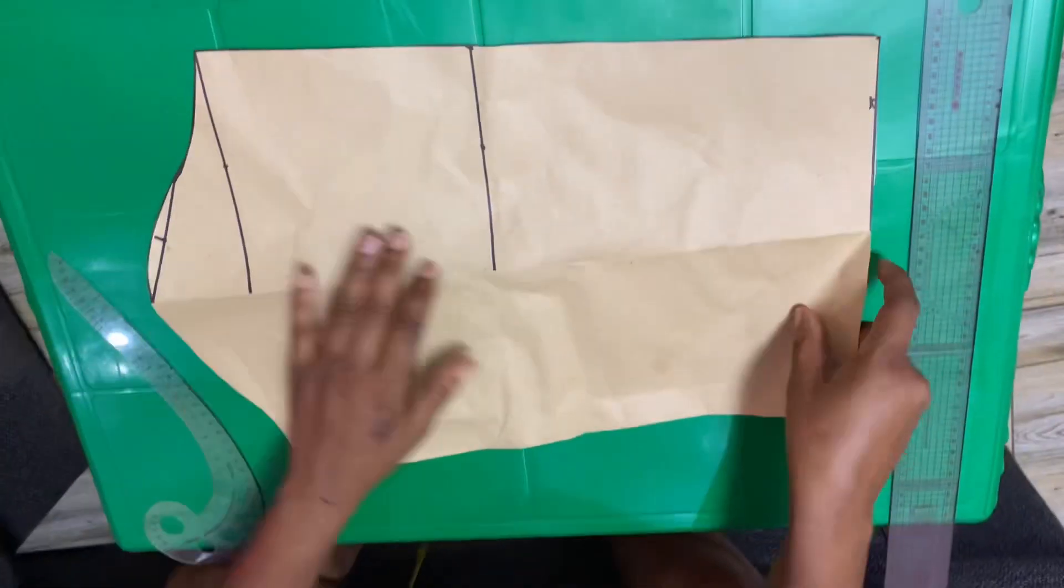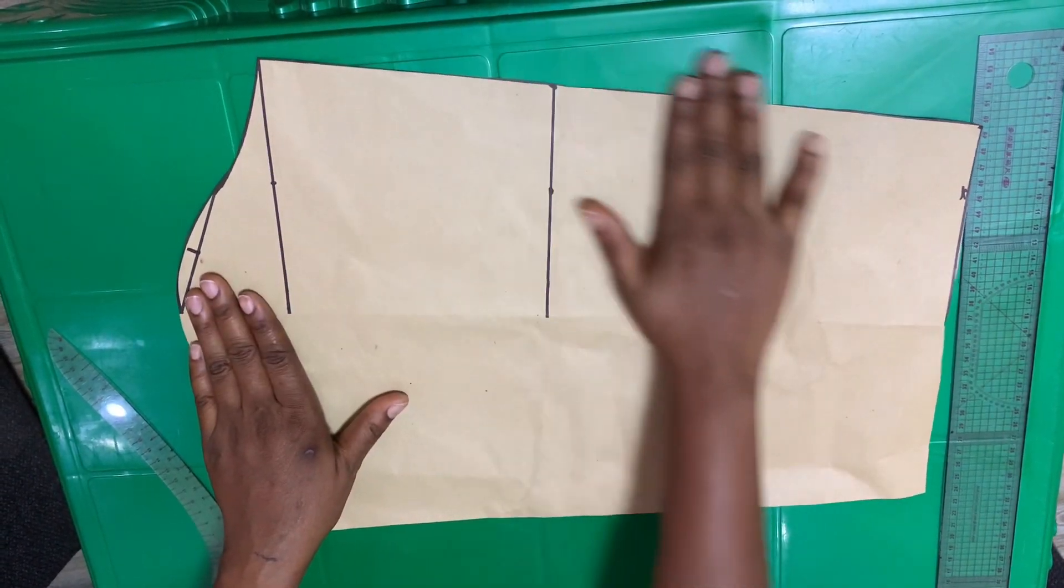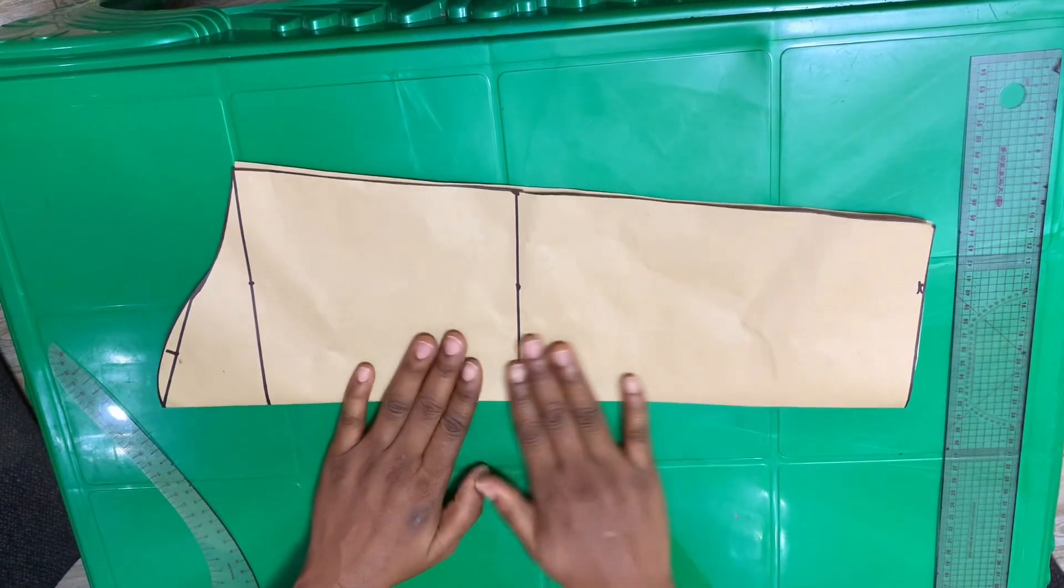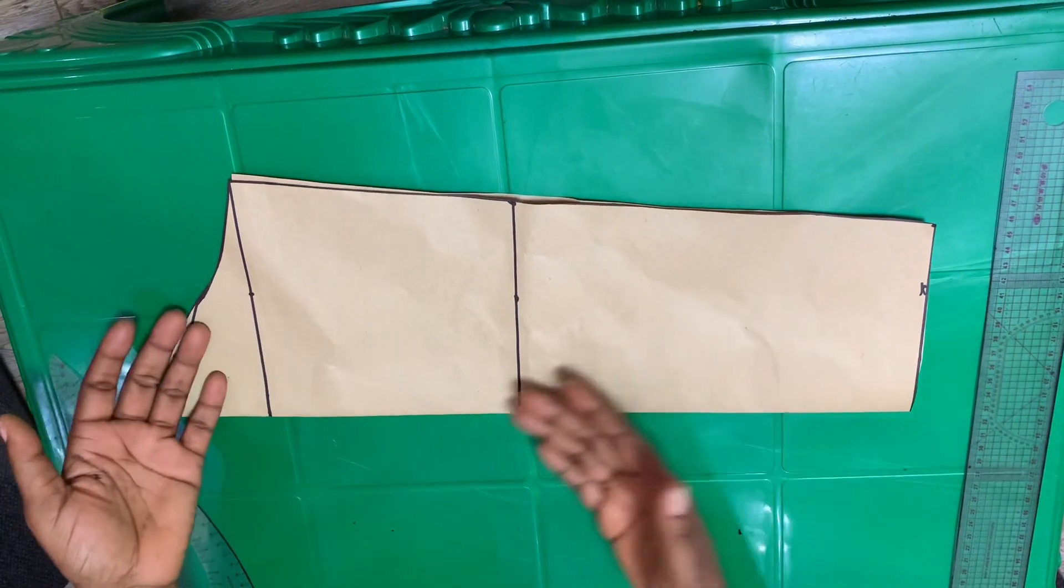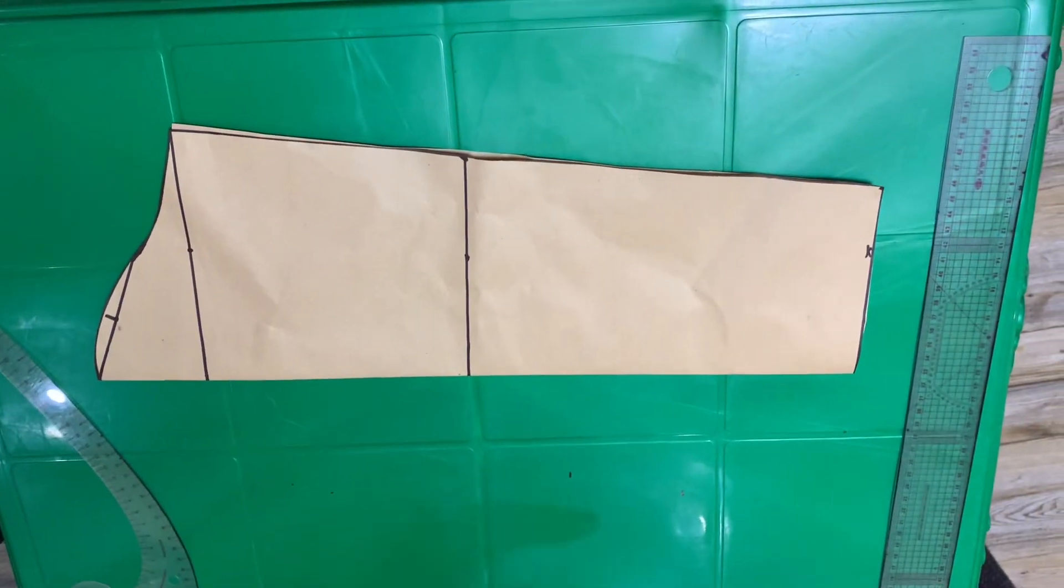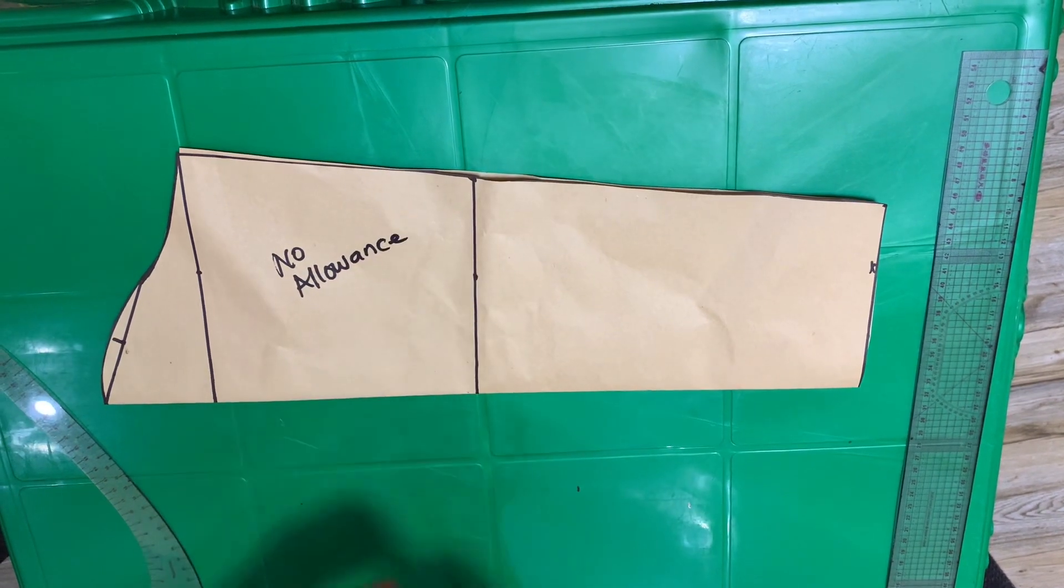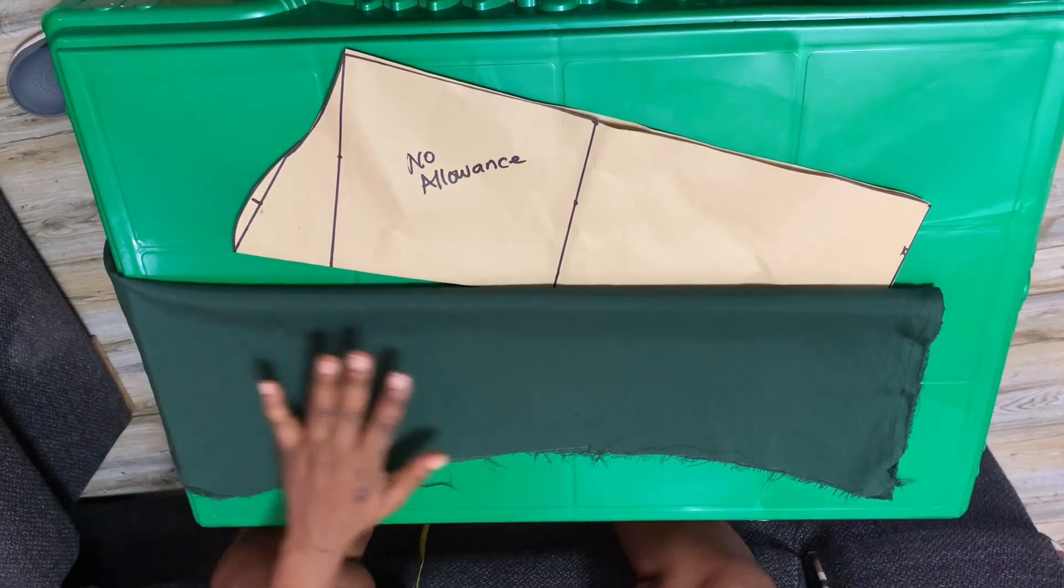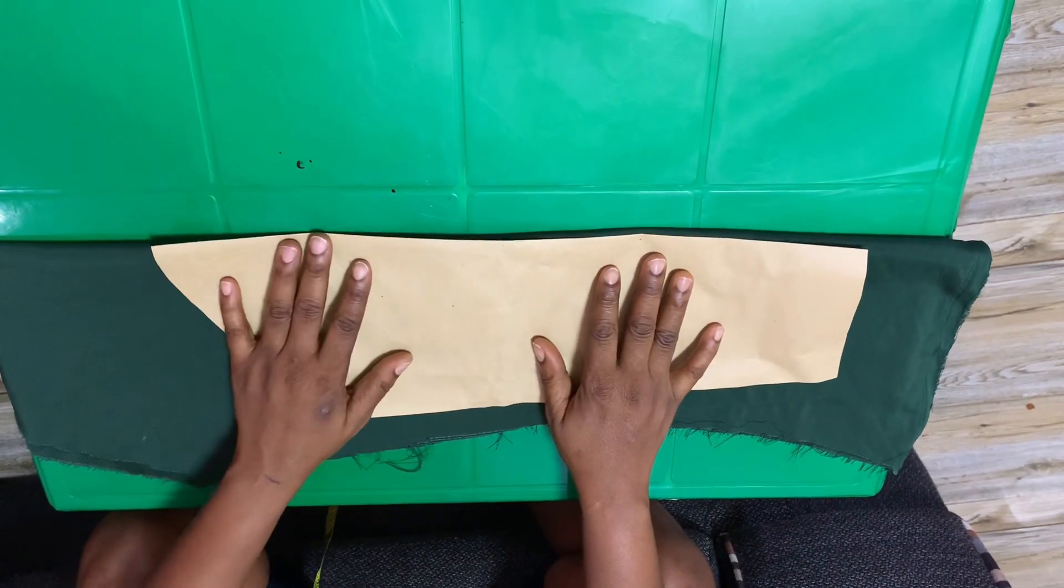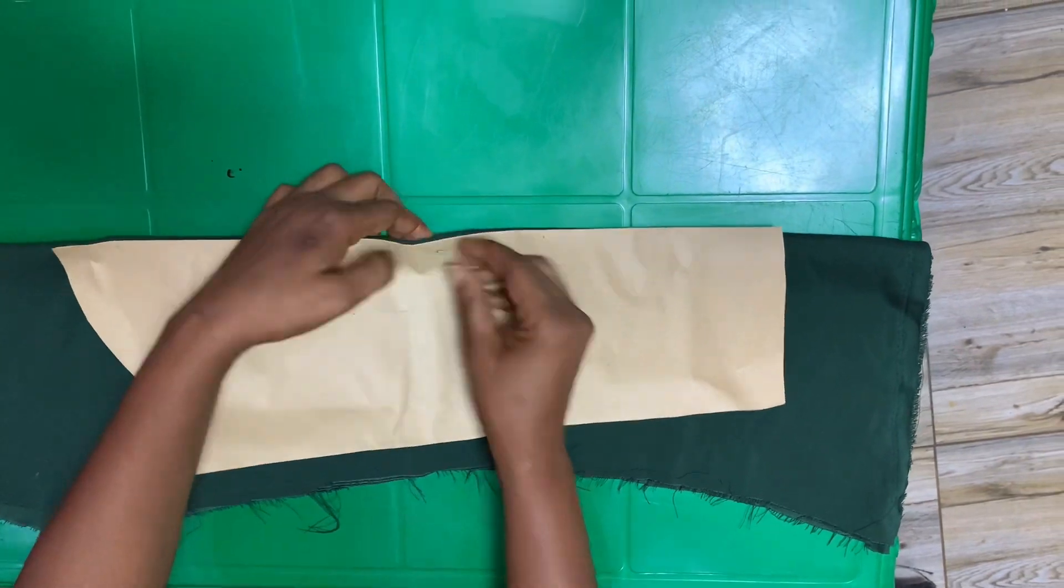Let's cut this one out and put it on top to draft the pattern on fabric. First, put no allowance so you can see where allowance goes. I will put it on top of this fabric and pin it down first. All beginners should pin it down.